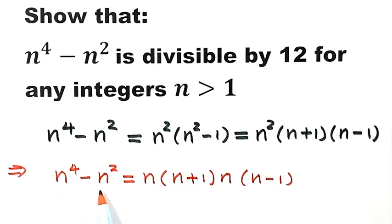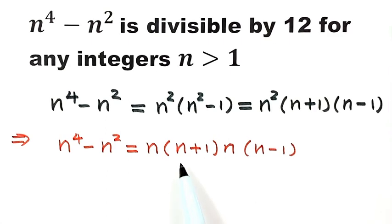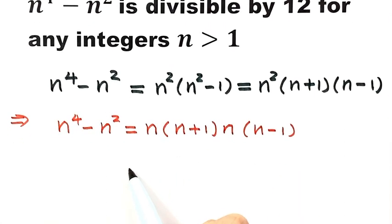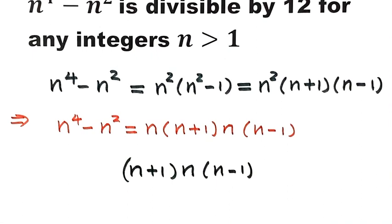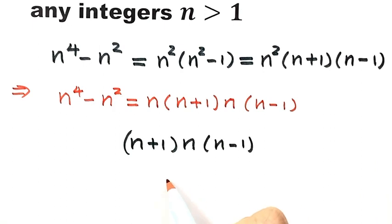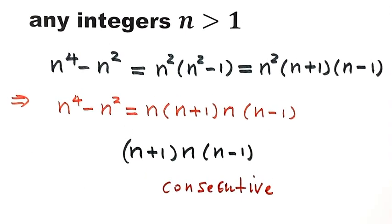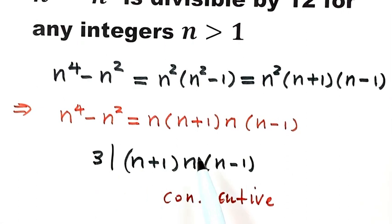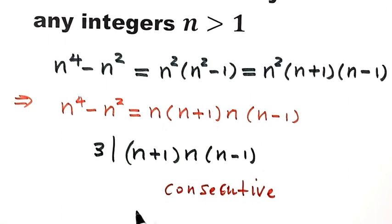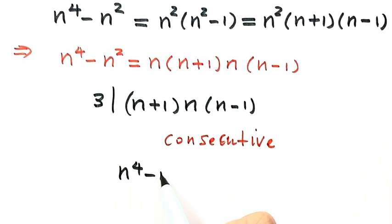If n to the fourth minus n squared is divisible by 12, then it must be divisible by both 3 and 4. First, let's check divisibility by 3. Notice that (n minus 1), n, and (n plus 1) are three consecutive integers, so one of them must be divisible by 3. Therefore their product is divisible by 3, which means n to the fourth minus n squared is also divisible by 3. That is our first result.